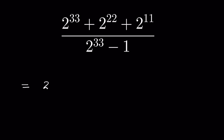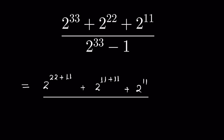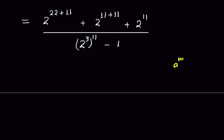We can write 2³³ as 2^(22+11), and 2²² as 2^(11+11), in the numerator. In the denominator, 2³³ can be written as (2³)^11 minus 1. We know that a^(m+n) = a^m × a^n, and (a^m)^n = a^(mn). So 2³³ = (2^3)^11, which is (8)^11.